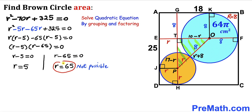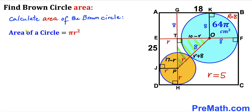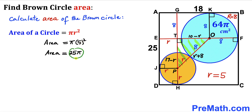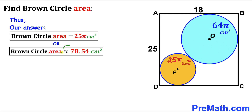Since r = 65 is not feasible given the rectangle dimensions, we reject it and accept r = 5 cm as the radius of the brown circle. Using the area formula Area = πr²: Area = π × 5² = 25π cm², which is approximately 78.54 cm². Thanks for watching — please don't forget to subscribe for more exciting videos!